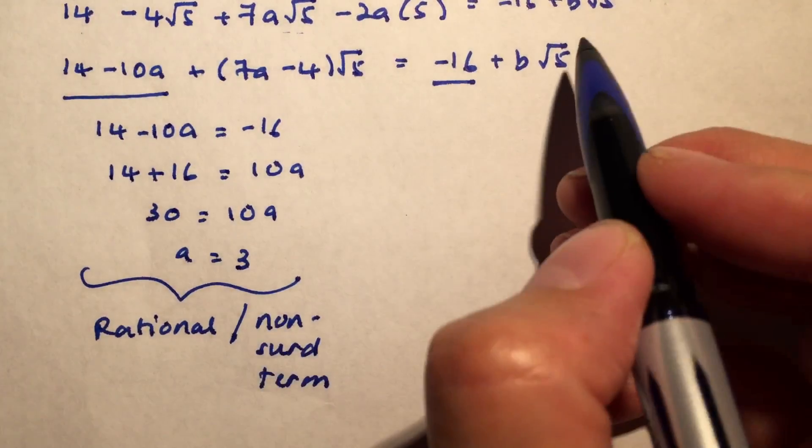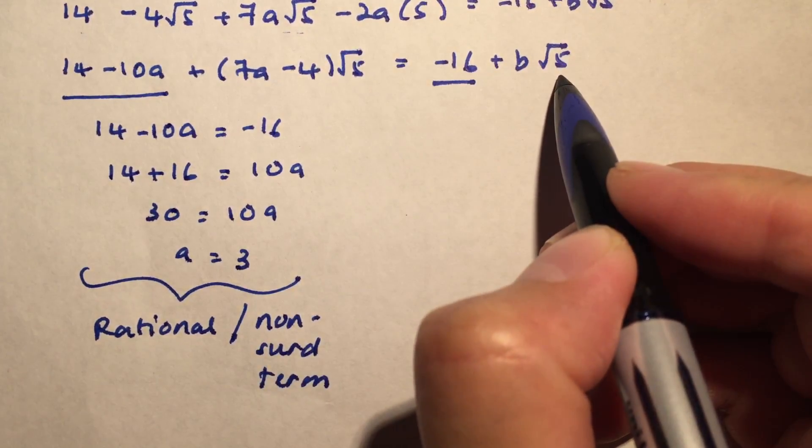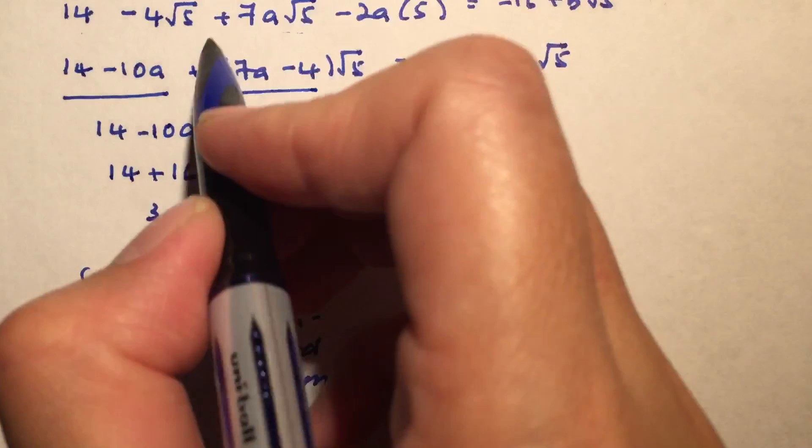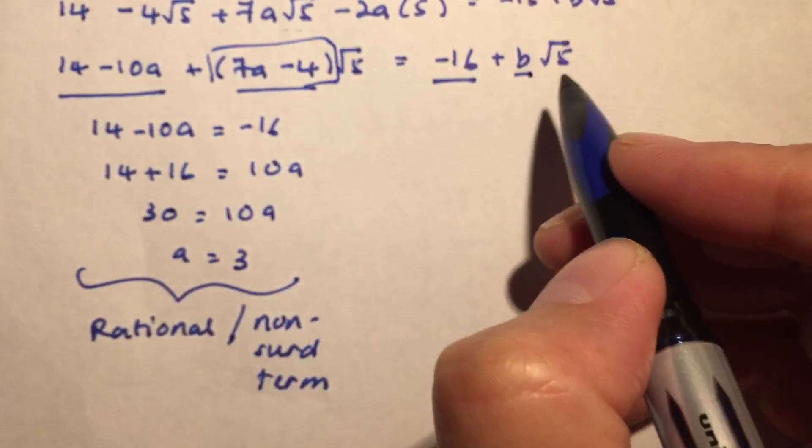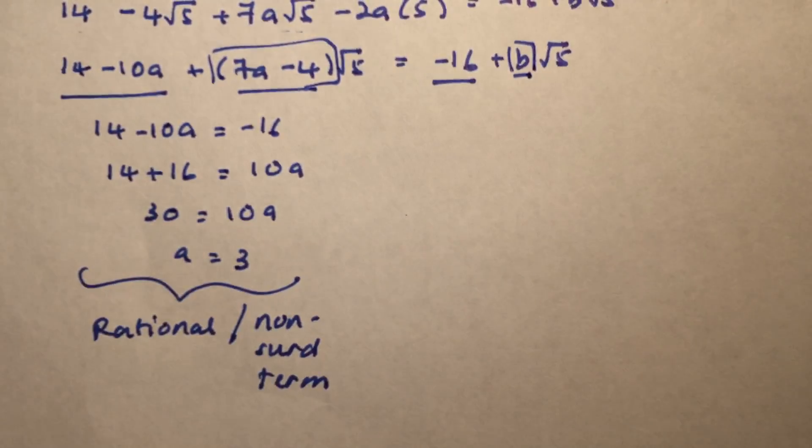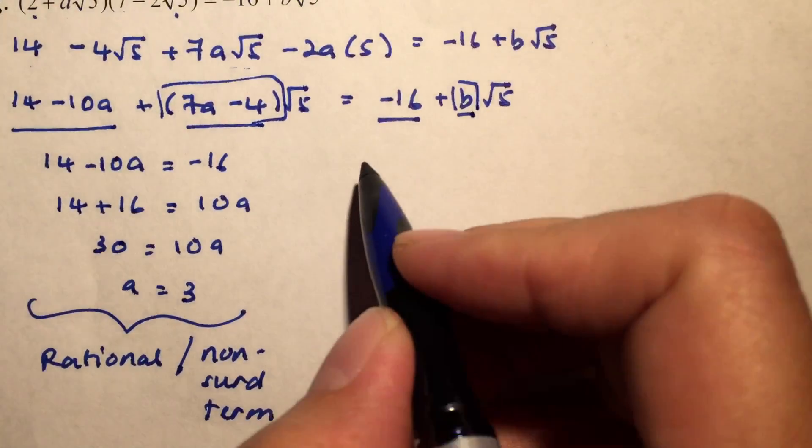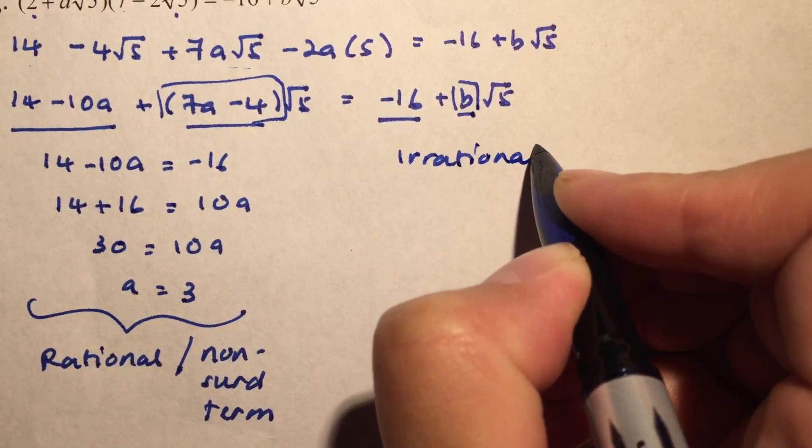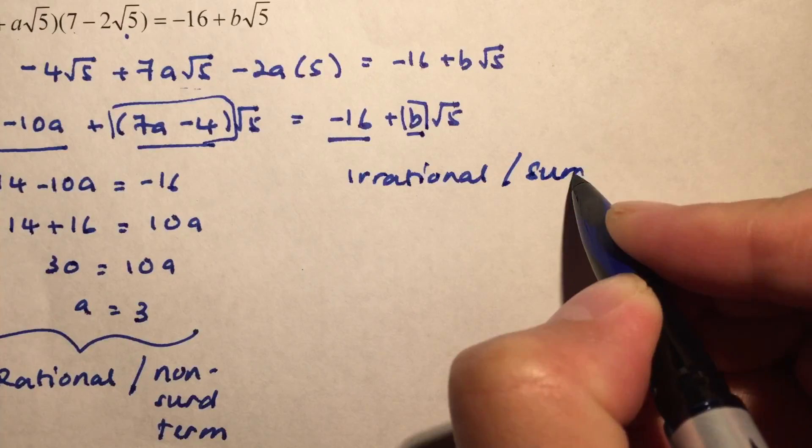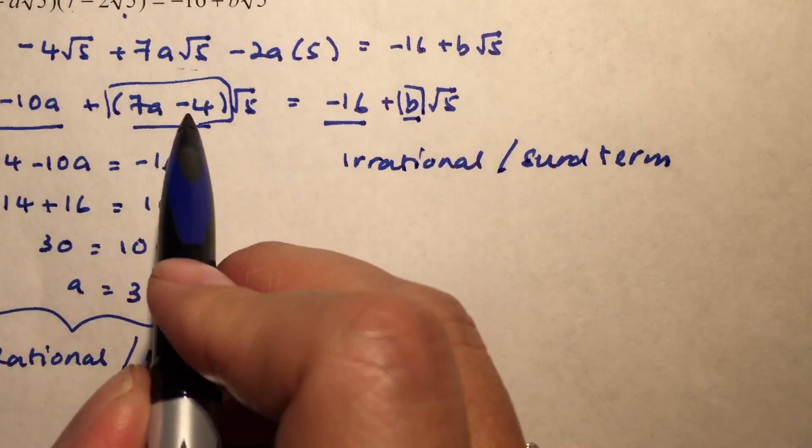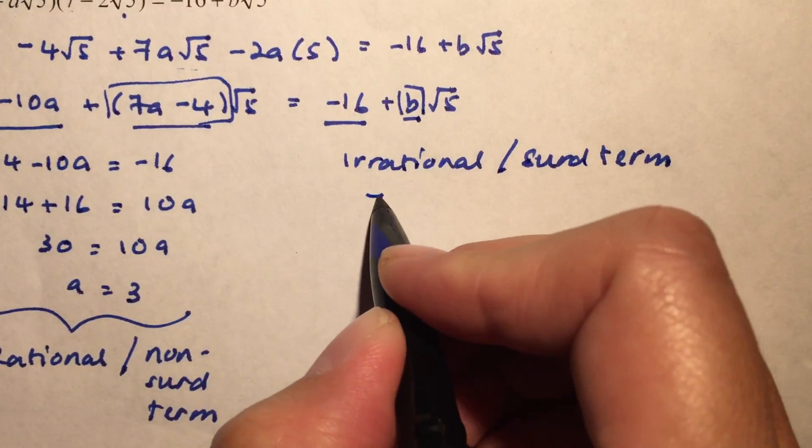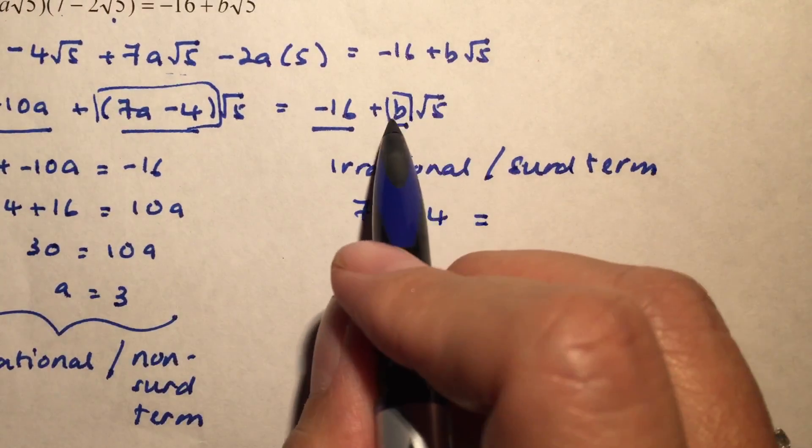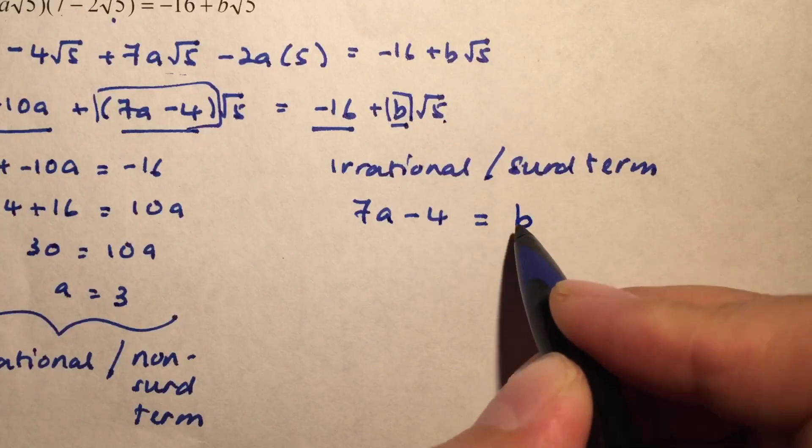Now, you will notice that we have a √5 here with a B, and we have a √5 here with a 7A minus 4. So now this value here must be equivalent to this value here. So now we are going to compare the irrational term, or what we call the surd term. So whatever is in front of the surd term was 7A minus 4 on the left-hand side, and whatever was in front of √5 on the right-hand side was just simply B.